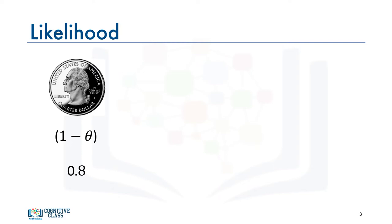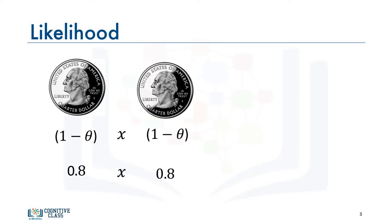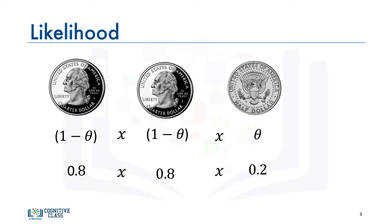Consider the second flip — we observe a second head, and to obtain the likelihood of observing that sequence, we simply multiply 0.8 times 0.8. For the third flip, we obtain a tail. To obtain the likelihood of observing that sequence, we simply multiply 0.8 times 0.8 times 0.2. The likelihood of that sequence is 0.096.